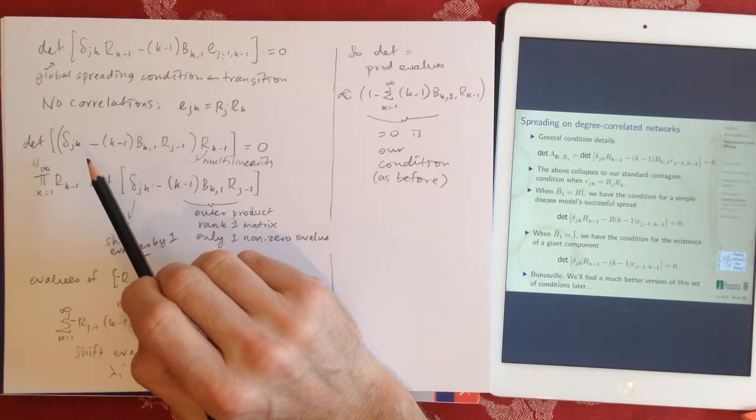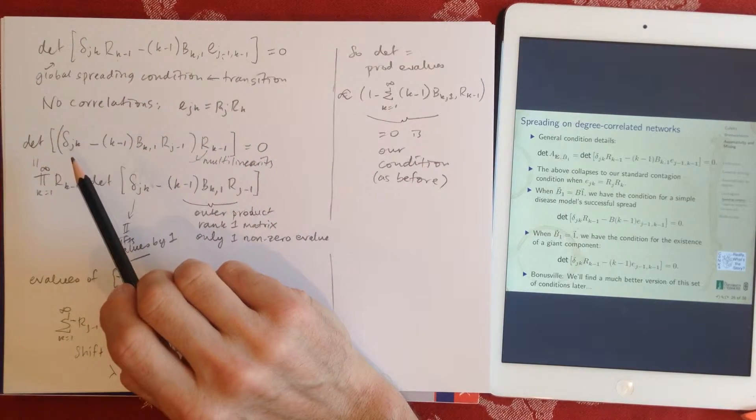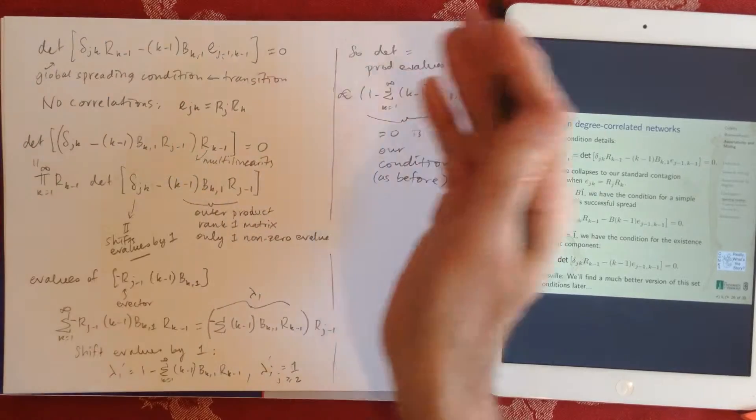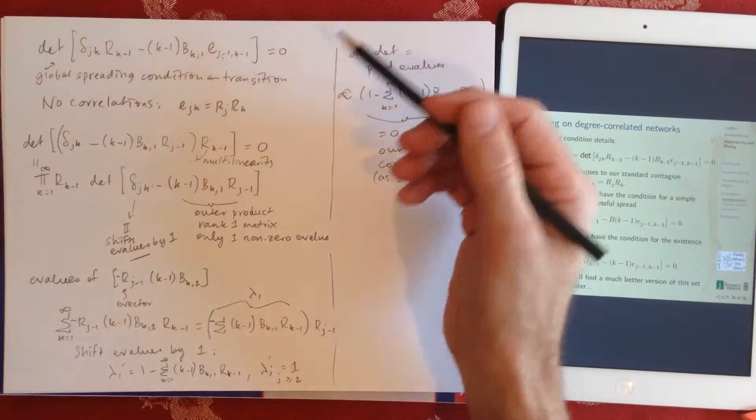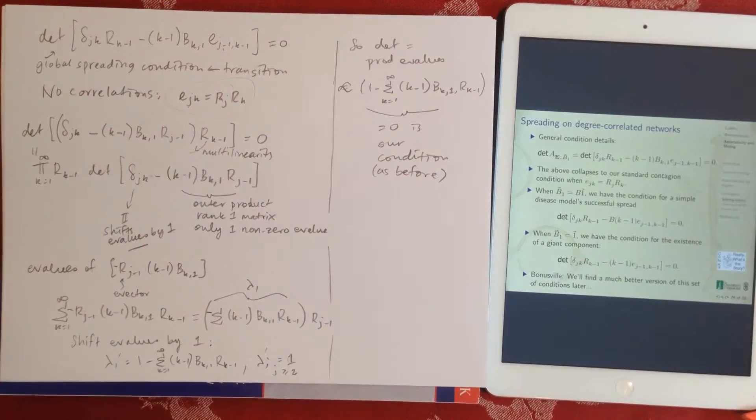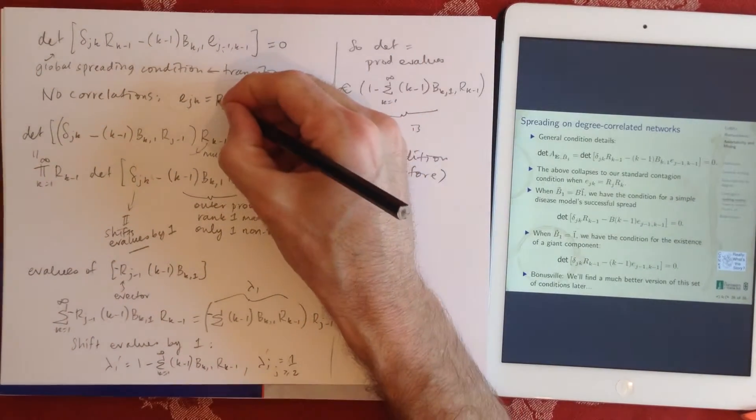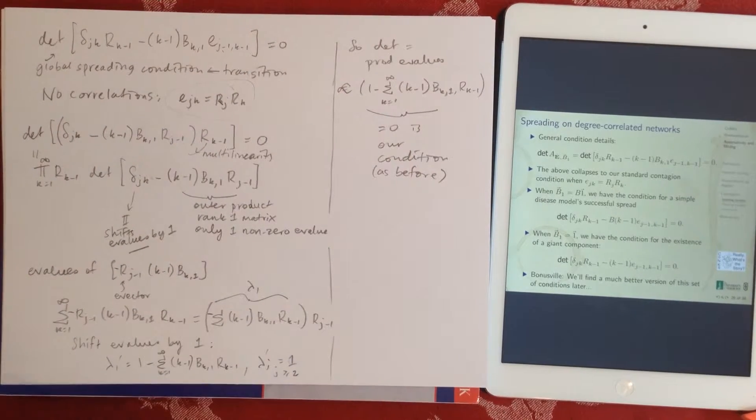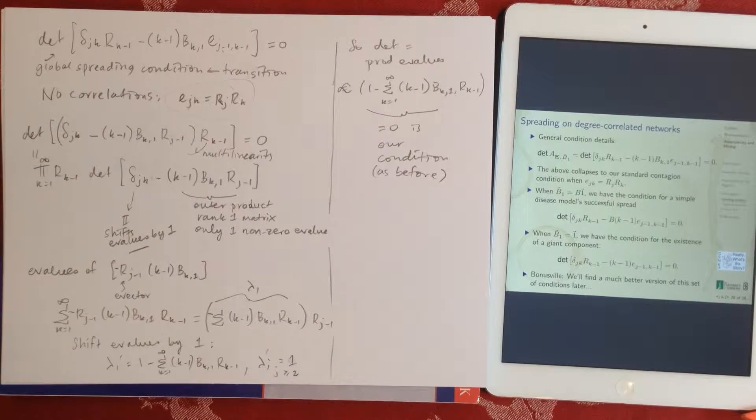Probably being infected when one friend is infected, that's the b's. So it makes a vector, so in principle this is an infinite network, so we have sums from zero to infinity. So no correlations, ejk is rj, rk, so they're not connected at all, so we're back to our original problem.